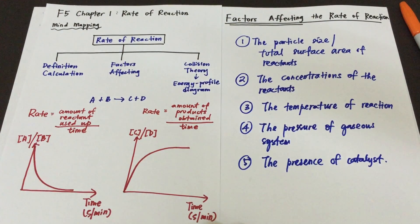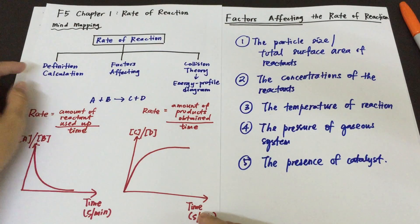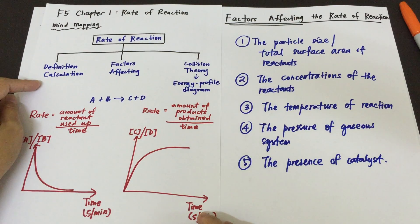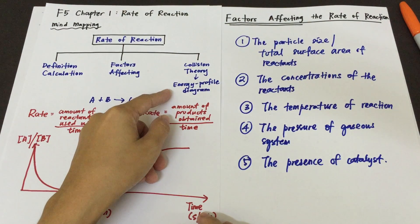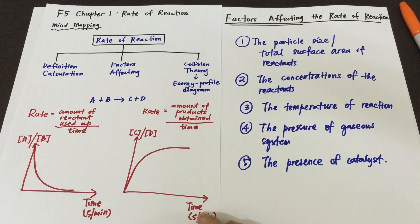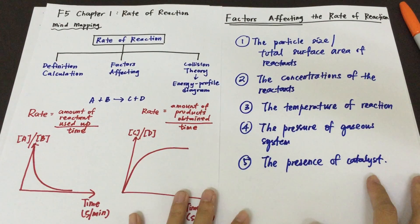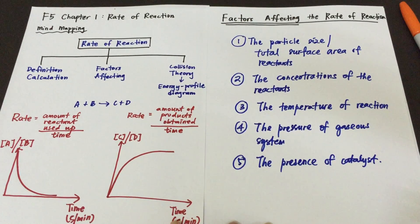Hi everyone, it's me again and I would like to continue with a video on factors affecting the rate of reaction today. We have actually covered the definition and some important calculations of rate of reaction, the collision theory, and the understanding of activation energy on the energy profile diagram or the energy level diagram. Today we are going to cover the factors affecting the rate of reaction and how to explain them in relation to the collision theory.